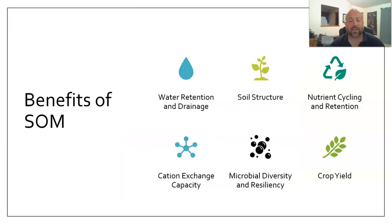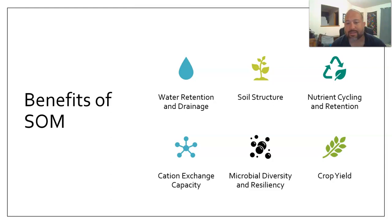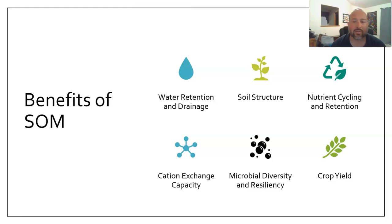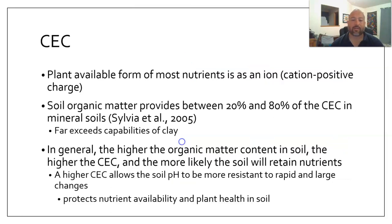Let's go over some benefits of soil organic matter: water retention and drainage, cation exchange capacity, soil structure, microbial diversity and resiliency, nutrient cycling and retention, and crop yield. We went over them quickly — now let's do it in detail.